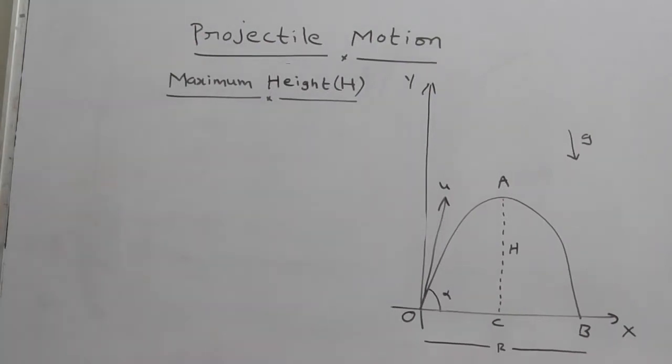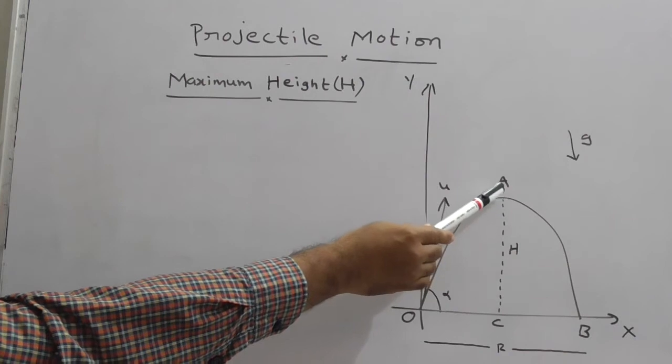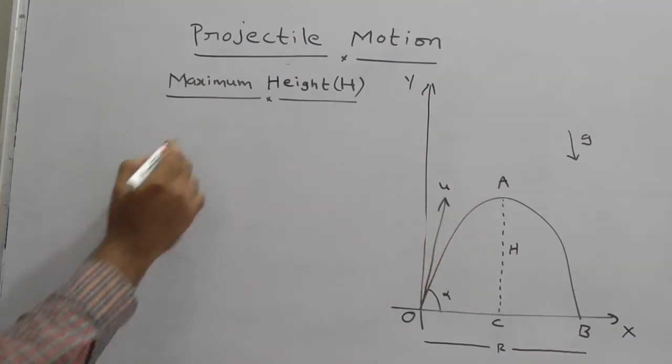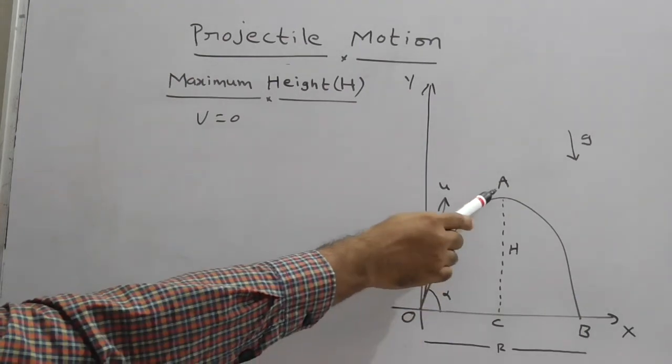Here we have to calculate maximum height. We know one basic concept: if a particle reaches maximum height at that point, velocity is zero. If a particle reaches maximum point at that point, velocity is zero.